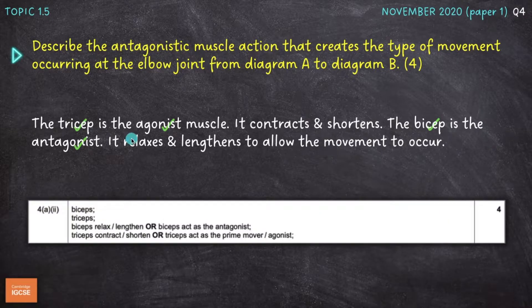So where have the marks come from here? As you can see from the mark scheme, we would have got two marks, simply for stating the two muscles, biceps and triceps, the two muscles involved in that movement. And then another mark for stating that the biceps relax or lengthen, which I have done here. Or that the bicep act as the antagonist, which I've also included. And then the other mark comes from stating that the triceps contract and shorten, which I've mentioned. Or that the triceps act as the prime mover or the agonist, the muscle doing the work.